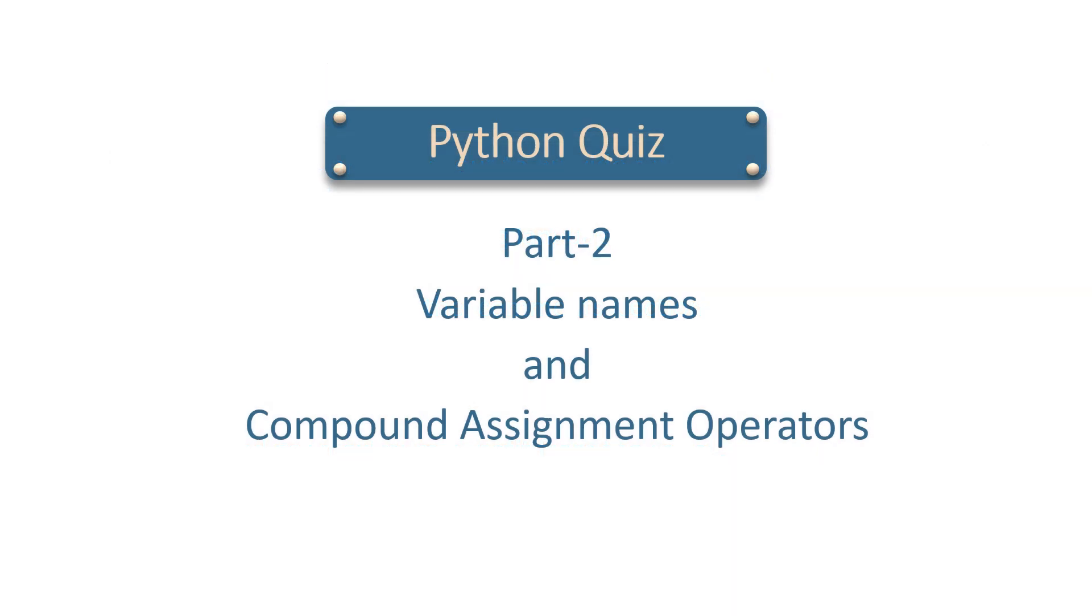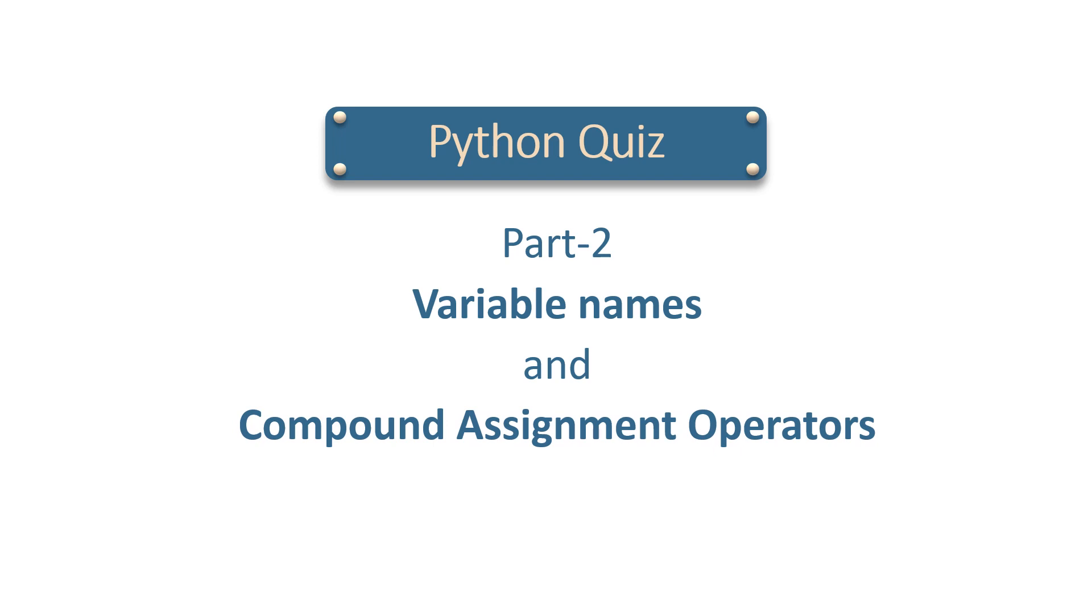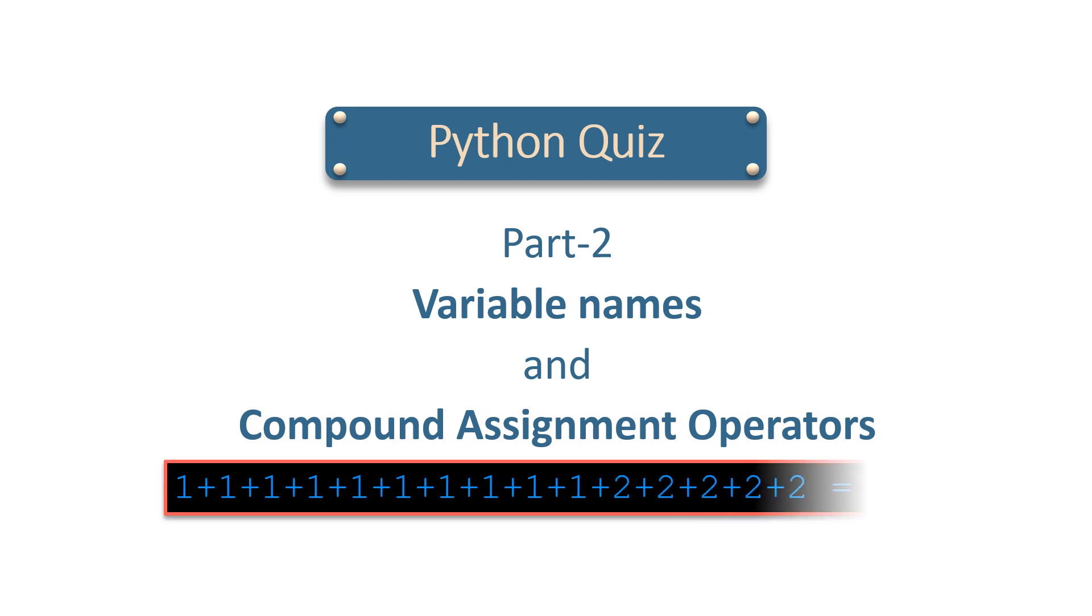This is part 2 of the quiz, covering variable names and compound assignment operators. This part of the quiz has 15 questions, totaling 20 marks.